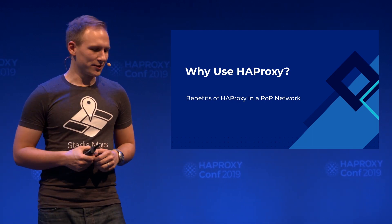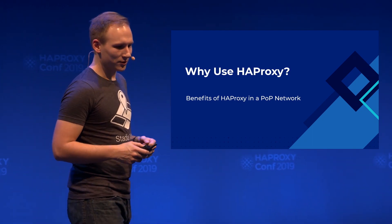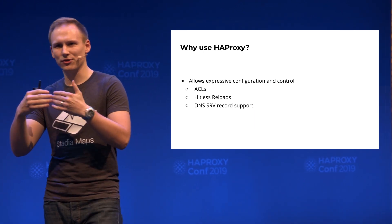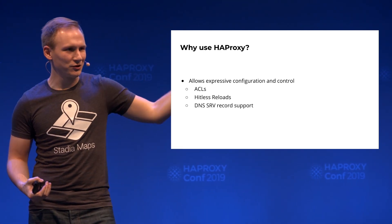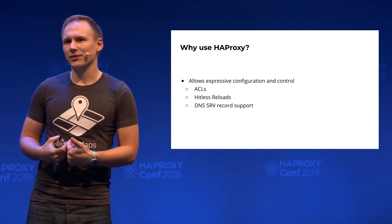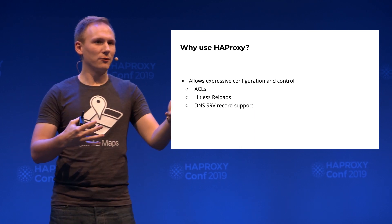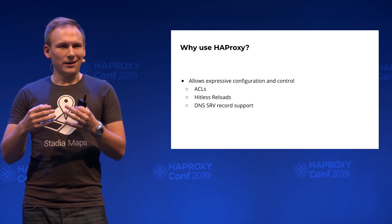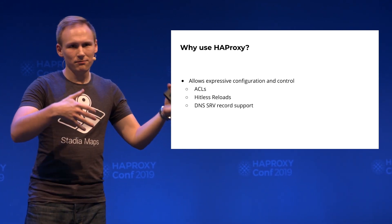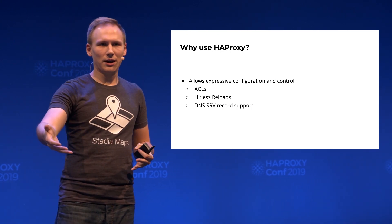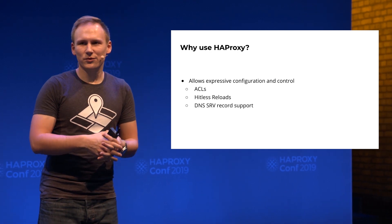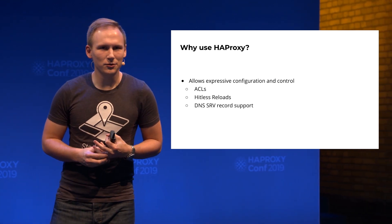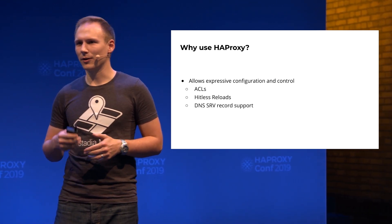But why should we use HAProxy for this? The configuration makes an enormous difference at the edge where you want to control every bit of traffic. We use ACLs extensively to manage the flow of requests through HAProxy and to determine which backend they end up on. We use ACLs to control all of our authorization and authentication — every API key, every referrer header is handled at the edge. We changed our authentication method, which sometimes took up to a second due to network latency, to being an instant process. Every single request is now authenticated instantly.